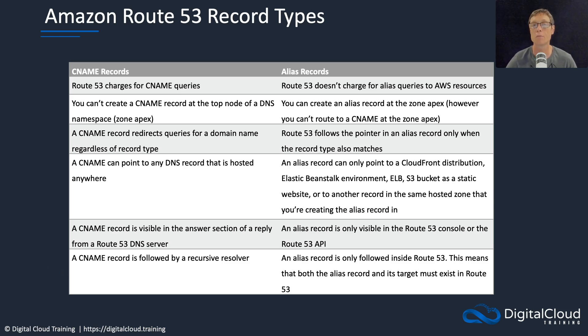As mentioned, there are specific AWS resources you can use an alias with, such as CloudFront distributions, Elastic Beanstalk environments, load balancers, and S3 buckets that are configured as a static website.